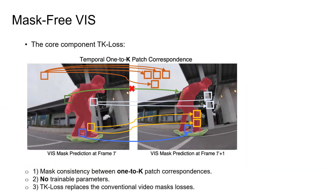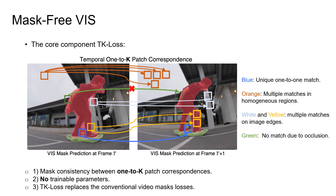To find regions corresponding to the same underlying video object, our TK loss first builds correspondences across frames by patch-wise matching. For each target patch, only the top K matches in the neighboring frame with high enough matching score are selected. A temporal consistency loss is then applied to all found matches to promote mask consistency. Unlike flow-based models which assume one-to-one matching, our approach builds robust and flexible one-to-K correspondences to cope with occlusions and homogeneous regions, without introducing additional model parameters or inference cost.